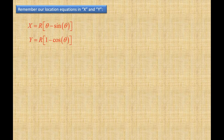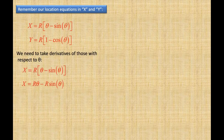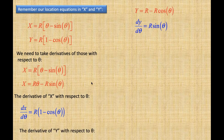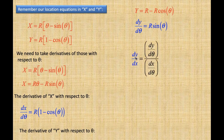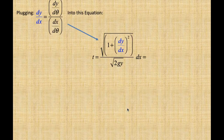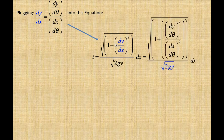Remember our location equations x and y — we need to take derivatives of those with respect to theta. For x, we multiply through by r to get r·theta minus r·sine theta. The derivative of x with respect to theta gives dx over d-theta equals r times one minus cosine theta. The derivative of y with respect to theta gives dy over d-theta equals r·sine theta. Then dy over dx equals dy over d-theta divided by dx over d-theta. We now plug these expressions into our time equation.